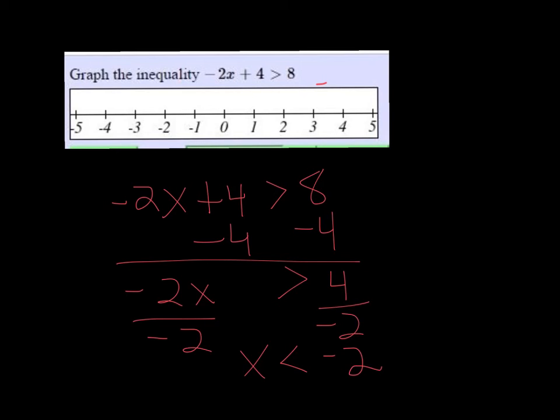So I plot my open dot on negative 2 and then I make an arrow going to the left, because we want less than.